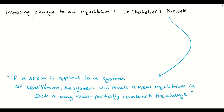In this video we're going to take a look at how we can impose changes to an equilibrium system and something called Le Chatelier's principle. We need to work out what sort of changes we can impose to a system that's at equilibrium. There are three that we're going to look at specifically.